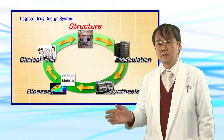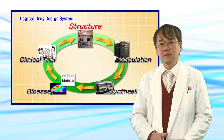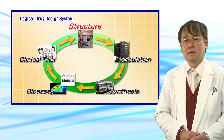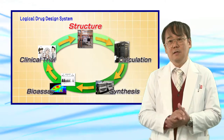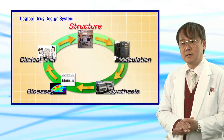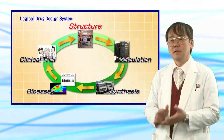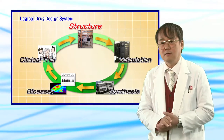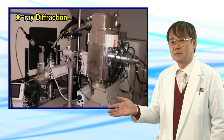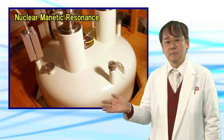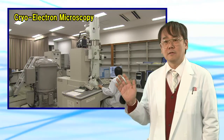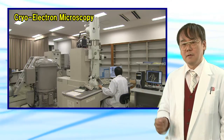First is the structure determination of the disease-causing agent. Nowadays, we can determine the three-dimensional structure of proteins and nucleic acids using only three kinds of methods: X-ray diffraction, nuclear magnetic resonance, and cryo-electron microscopy.